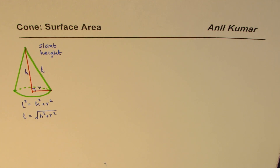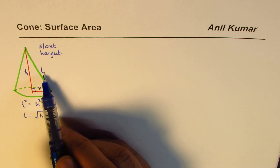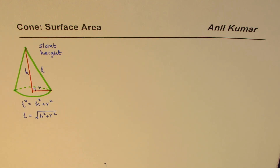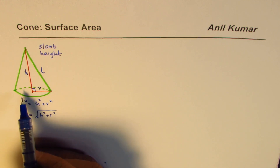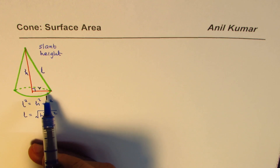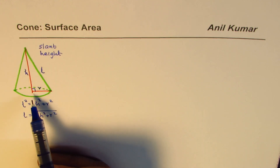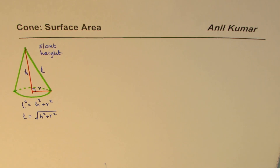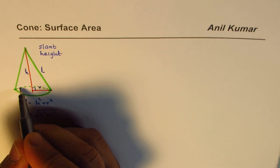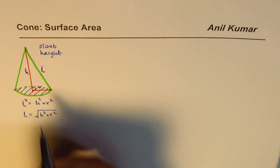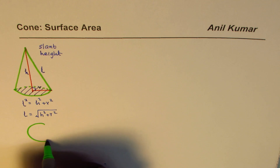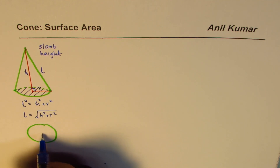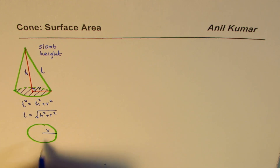The formula for surface area is linked with the slant height. One of the surfaces of the cone is the circle at the base. If you cut across the bottom it is always a circle, and its area is πr². Let's call this Area 1.